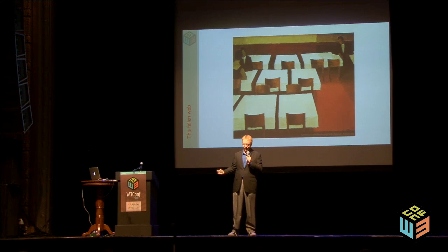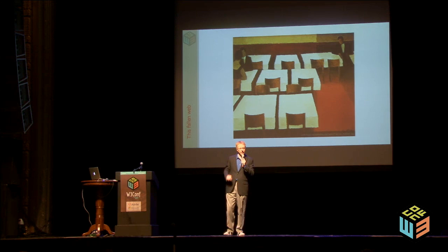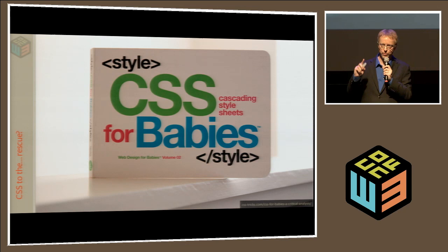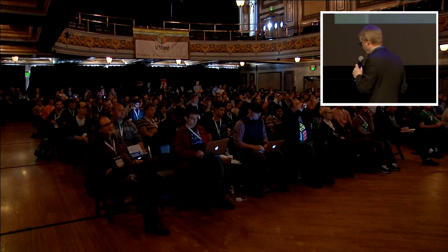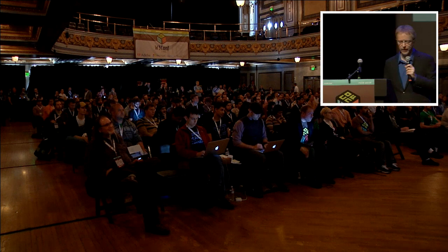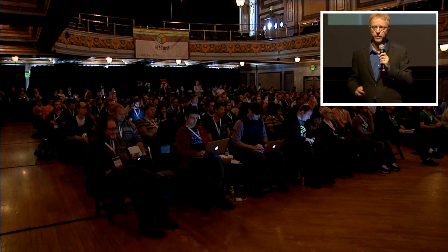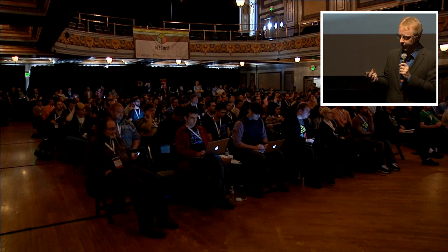So we got past that period, thanks in part to IE5 for the Mac. It was a great browser, but then so was IE6 at the time. We moved into the era of CSS. We had CSS to lay out our documents — except there's kind of a problem with that. CSS was not a layout language. CSS1 certainly wasn't. If you read CSS1, it's actually pretty short; you could print it out and probably read it in an evening. It's very simple and it doesn't have any layout. It's an appearance system, not a layout system.